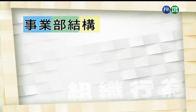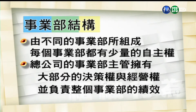第三个，事业部结构是指由不同的事业部门所组成的组织结构，每一个事业部门只有少量的自主权。总公司的事业部门主管拥有大部分的决策权以及经营权，并且负责整个事业部的绩效。